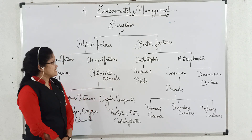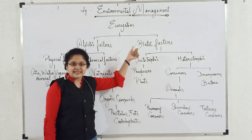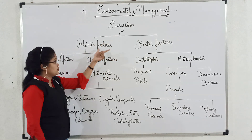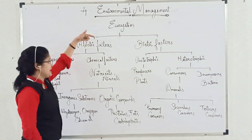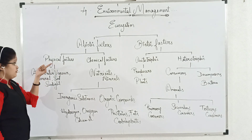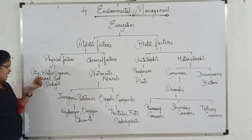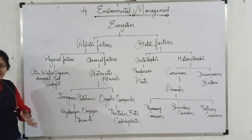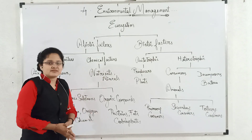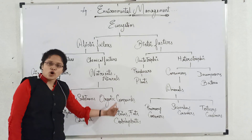Now we will see the chart of the ecosystem. The interaction between abiotic factors and biotic factors forms an ecosystem, meaning these are the two factors of ecosystem: abiotic factors and biotic factors. Abiotic factors consist of two types: physical factors and chemical factors. Examples of physical factors are air, water, water vapor, minerals, soil, sunlight, etc.